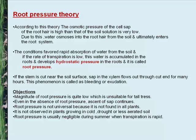Root pressure theory: the osmotic pressure of the cell sap of the root hair is higher than that of the soil solution. Due to this, water osmoses into the root hair from the soil and enters the root system. If the rate of transpiration is low, water accumulates in roots and develops hydrostatic pressure called root pressure. If the stem is cut near the soil surface, sap flows out through the cut end for many hours — this is called bleeding or exudation. Objections: root pressure magnitude is quite low and unsuitable for tall trees; ascent of sap continues even in absence of root pressure; root pressure is not universal; it is not observed in plants growing in cold, drought, or less aerated soil; and is negligible during summer when transpiration is rapid.